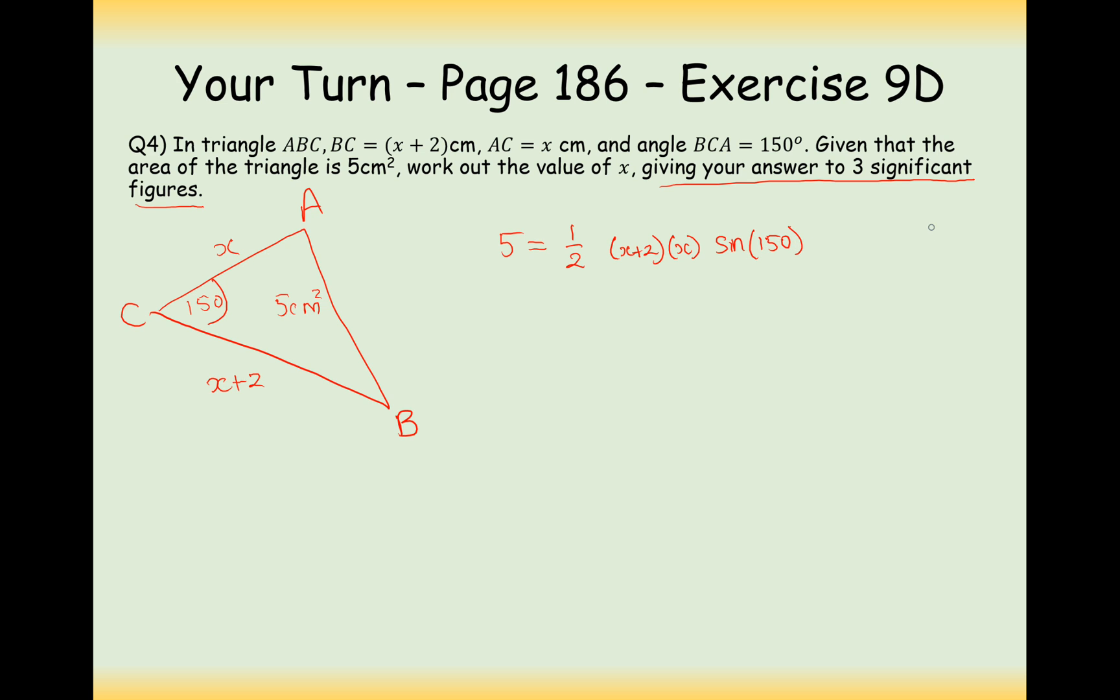Now I know sine of 150 is 30. It's the same as sine of 30 because of that sine transformation. So that's going to be sine of 30, which is a half. So if I times through by 4 onto the other side, because I've got a half here and a half here, that gives me x squared plus 2x. Take the 20 onto the other side, and we'll flip the equation around, and we get x squared plus 2x minus 20.